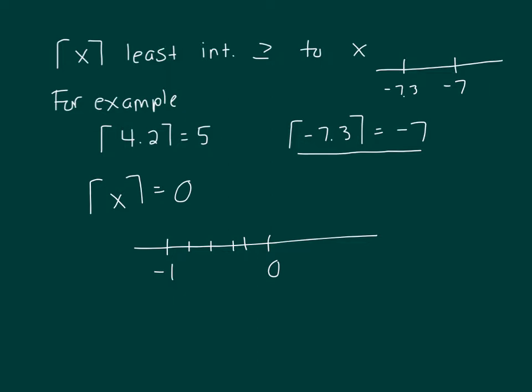For example, the least integer of negative 0.9, what's the least integer greater than or equal to that? Well, it would have to be 0.